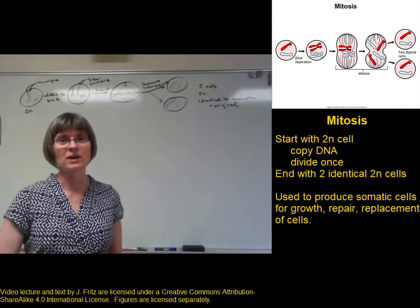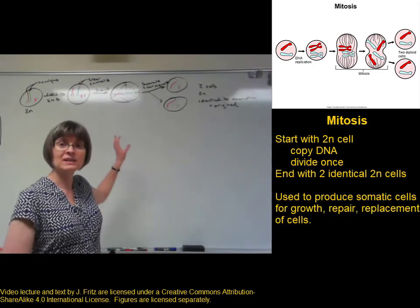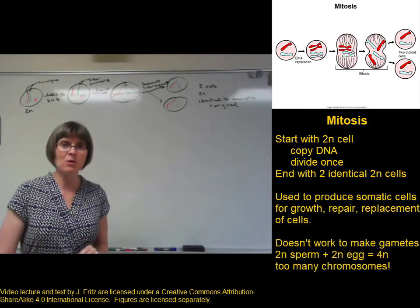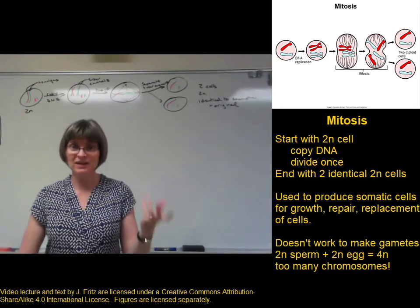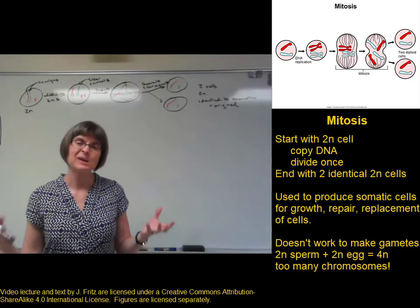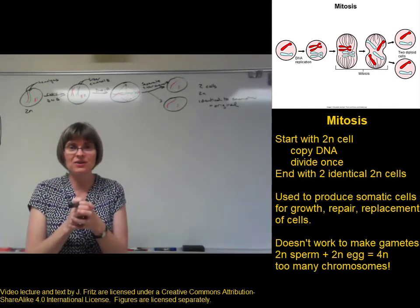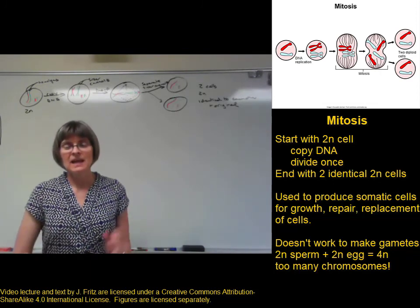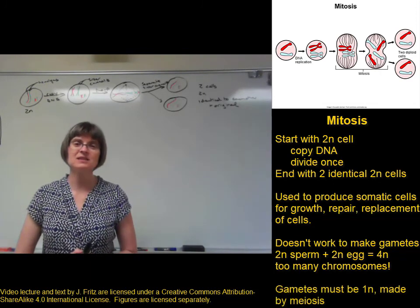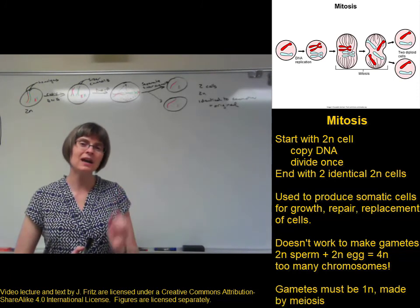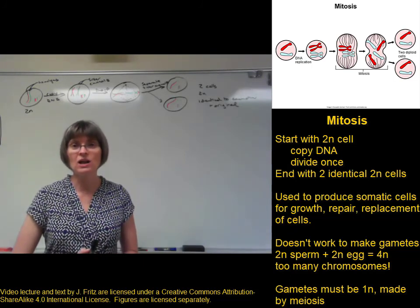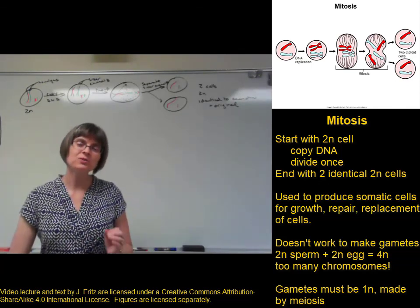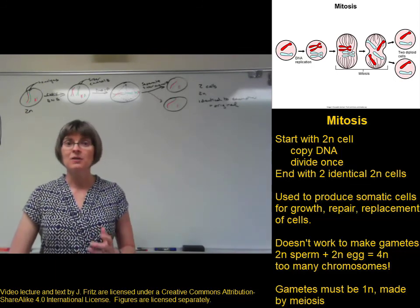The one thing mitosis is not good for is producing gametes. We cannot use the process of mitosis to produce gametes, because mitosis produces 2n cells. If we started with a 2n sperm — two copies of each chromosome — and a 2n egg, when the sperm and the egg join together you would end up with four copies of each chromosome, which is way too many. In order to make gametes, our gametes need to be 1n — haploid — with one copy of each chromosome. To make haploid cells, we need to use a different cell division process: the process of meiosis.